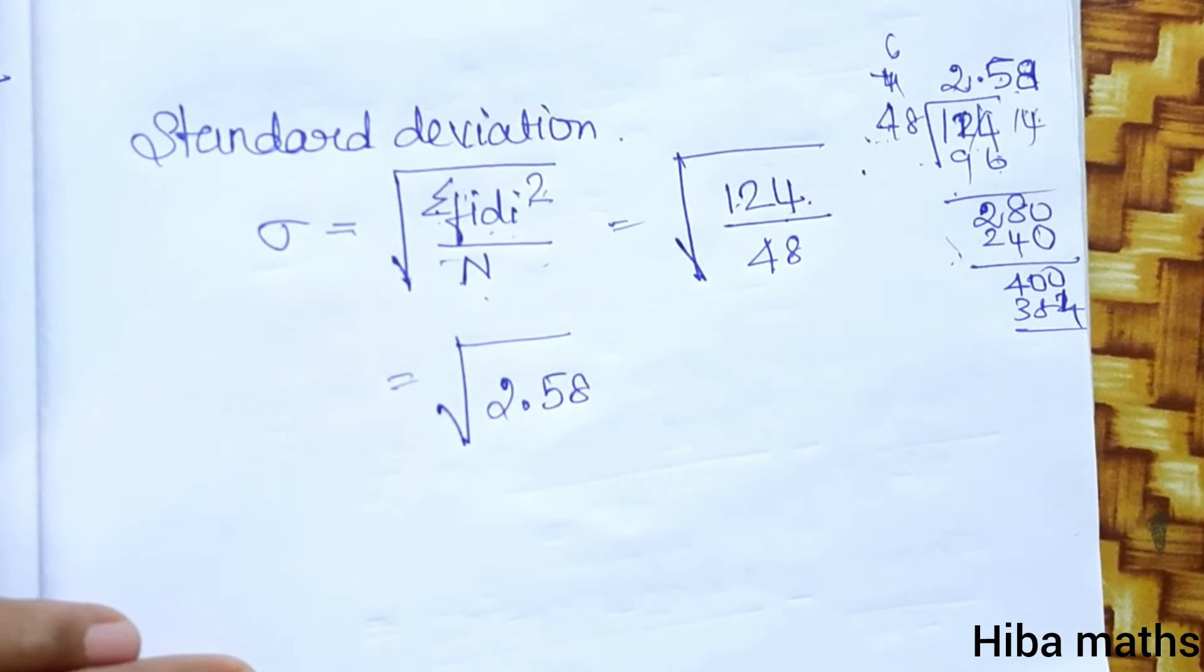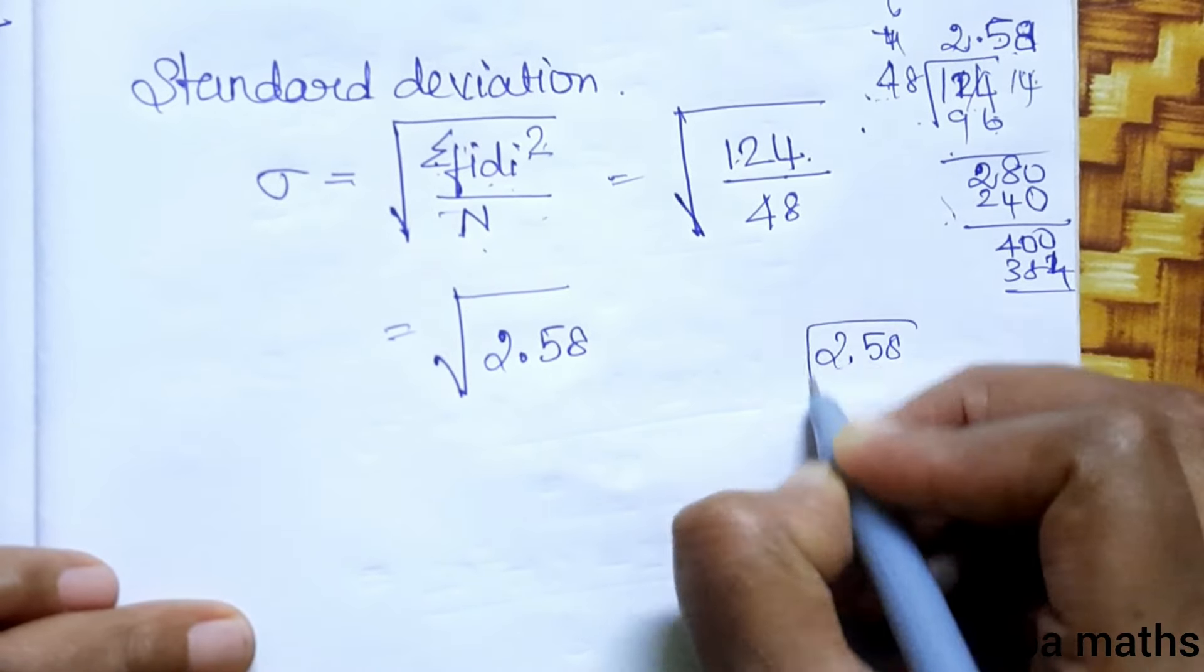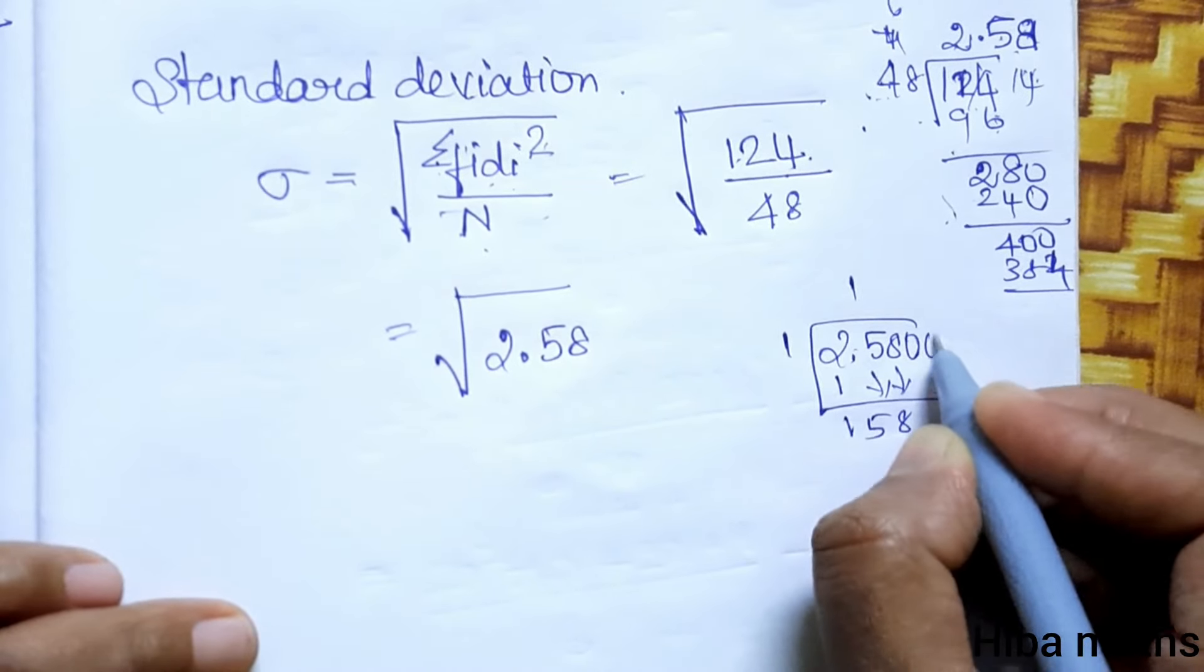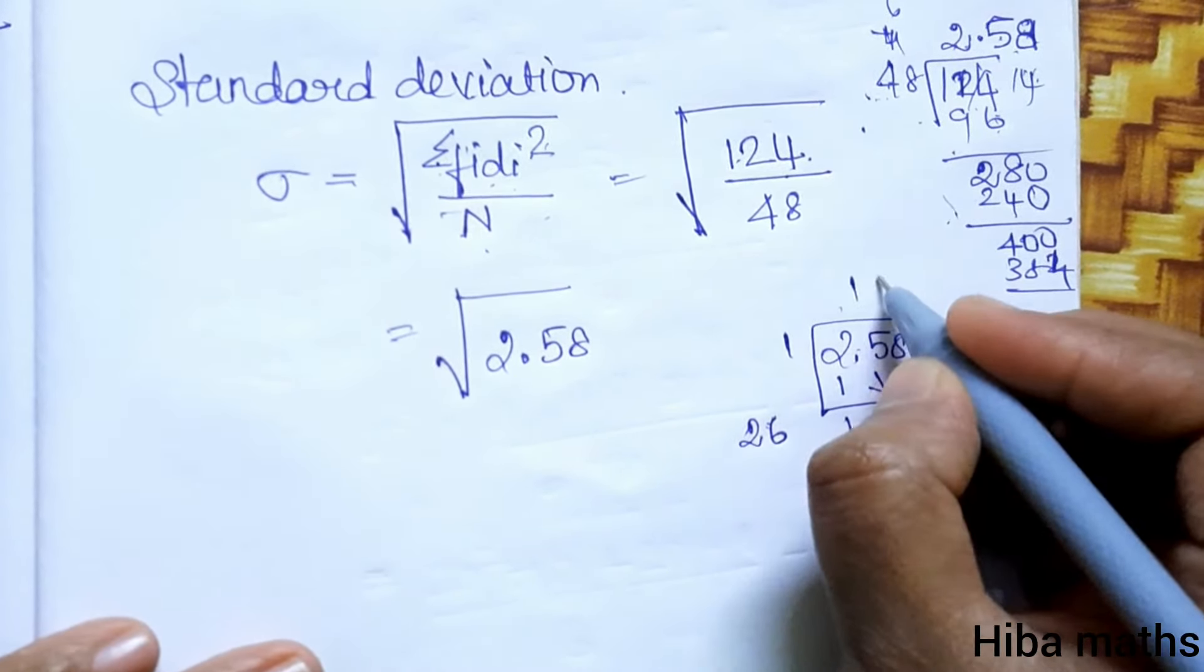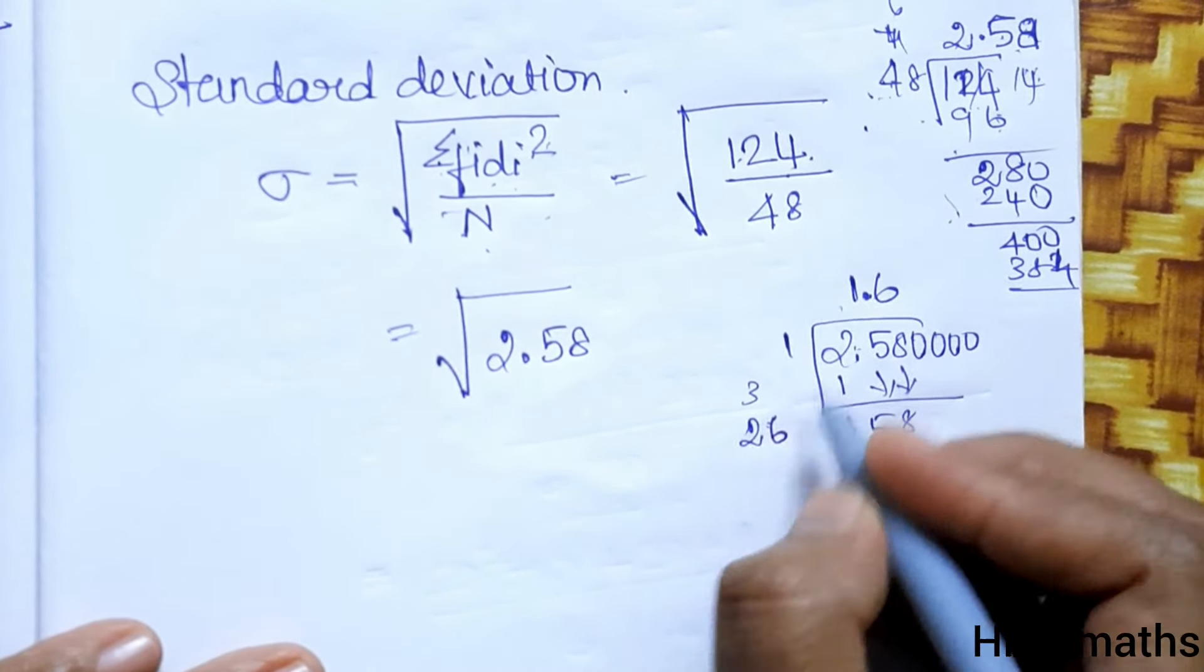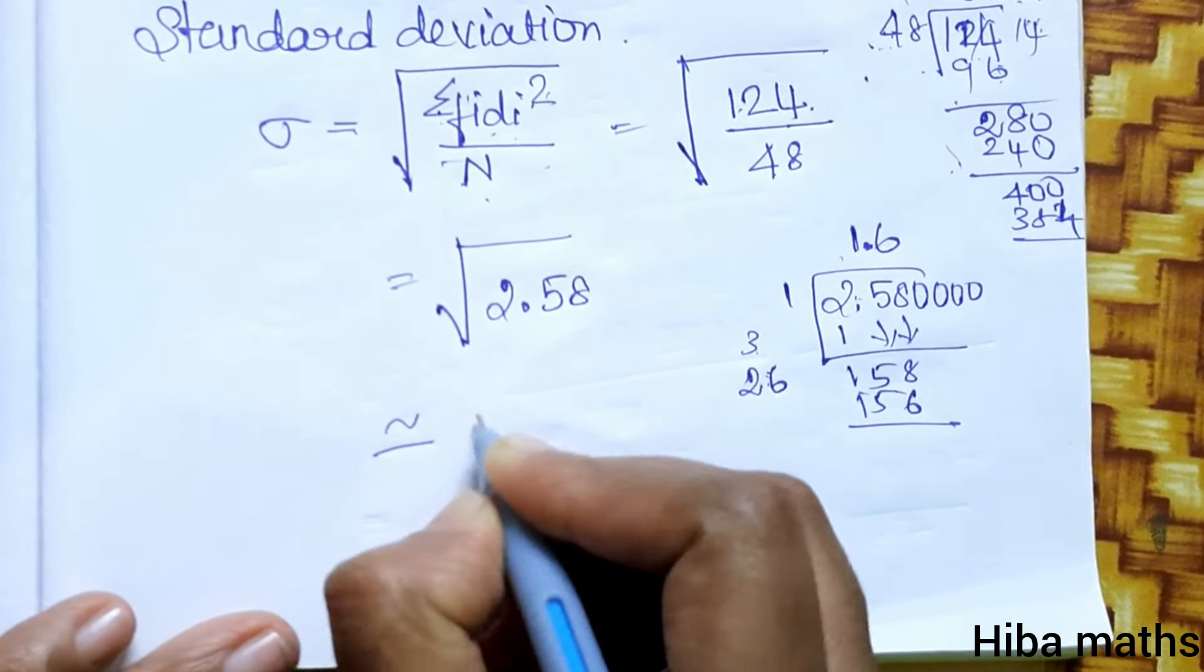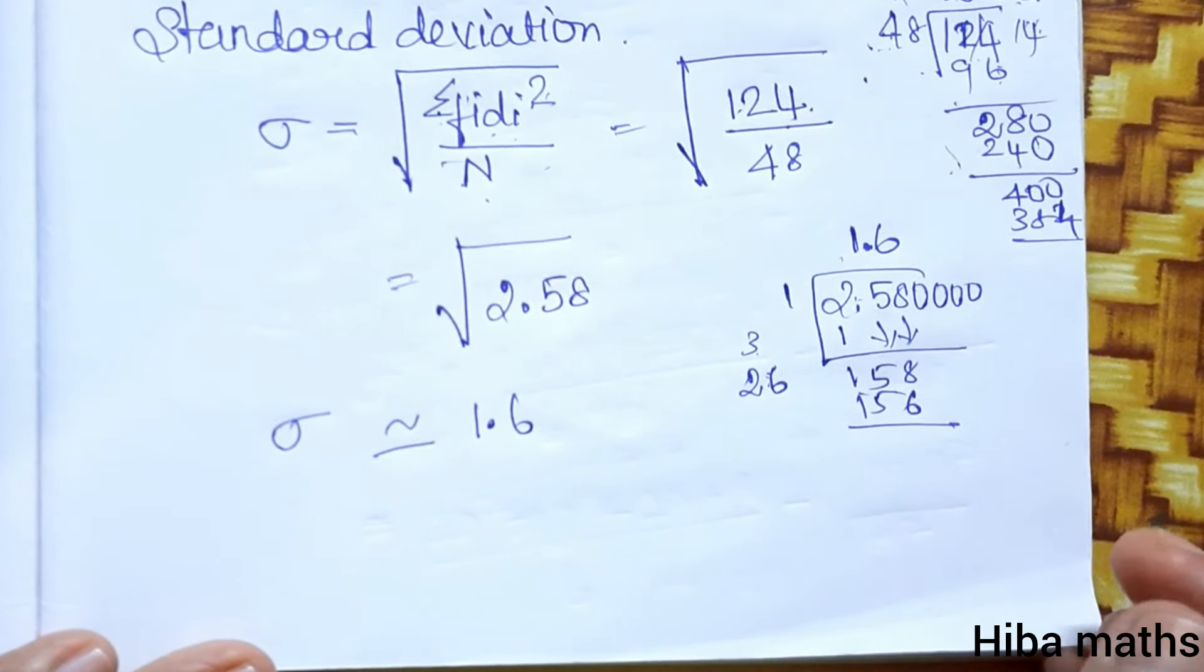Now we have the square root of 2.58. One times one, balance one, five eight. Point equals zero. One times two is two, six equals zero. Six times six is 36, balance three. Six times two is twelve, equals 15. The answer is 1.6. So we have approximately 1.6 as the standard deviation value.